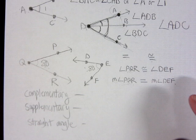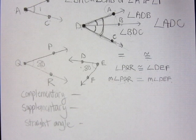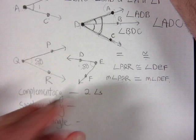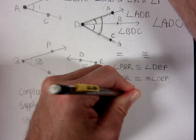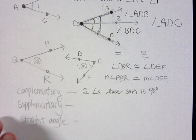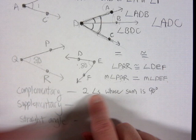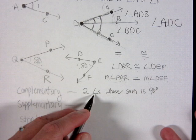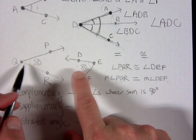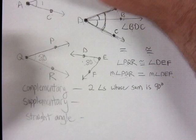Complementary refers to two angles whose sum is 90 degrees. Note: it's specifically two angles — not three. Angles of 30, 30, and 30 are not complementary even though they add up to 90. Also, the two angles don't have to be adjacent; as long as they add up to 90, they are complementary.